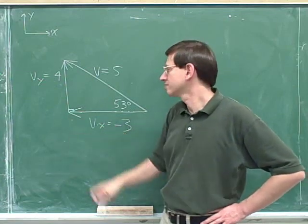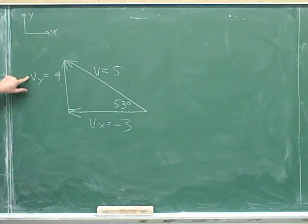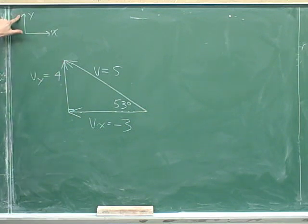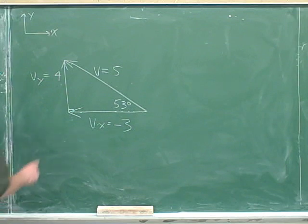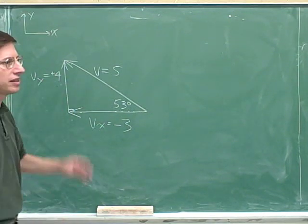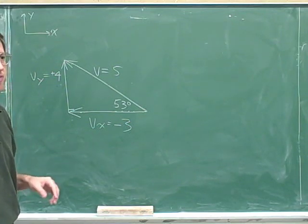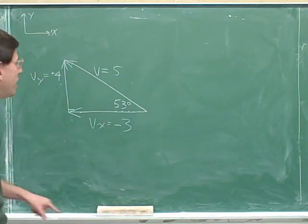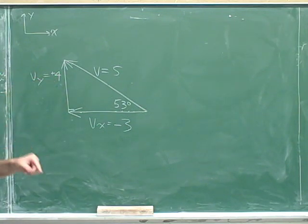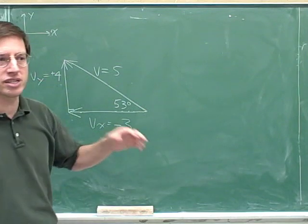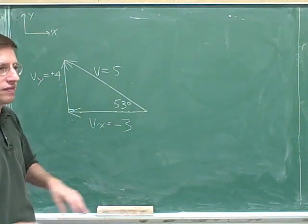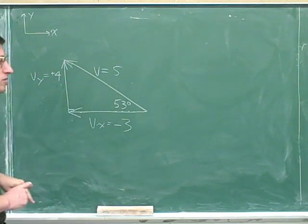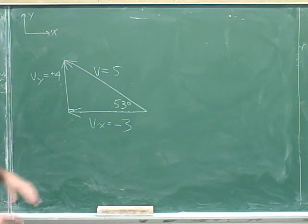How about V sub y? The positive y direction is up, and the y component is pointing up — so we're pointing in the positive direction, and this should be positive. Now, in ordinary life we don't usually put positive signs in front of positive numbers, but that's not acceptable for a beginning physics student. A beginning student should put negative signs in front of every negative number and positive signs in front of every positive number — this is a really crucial habit to get into.